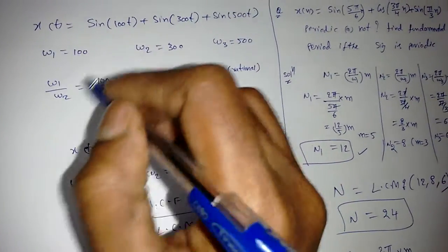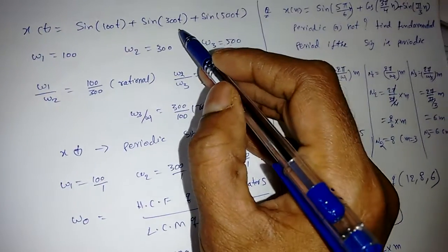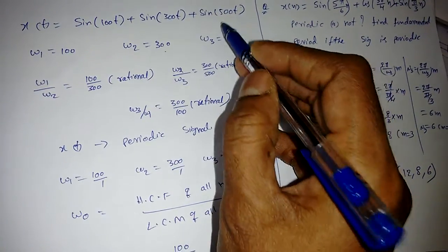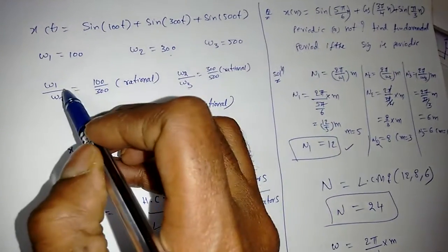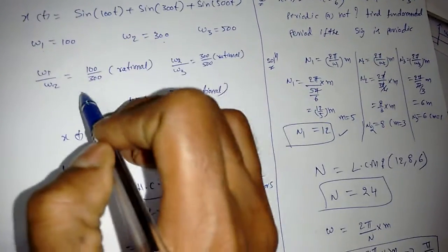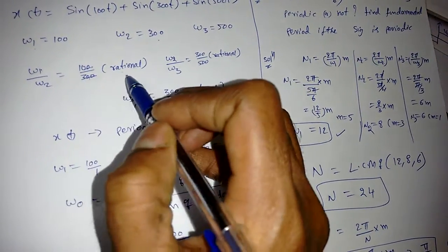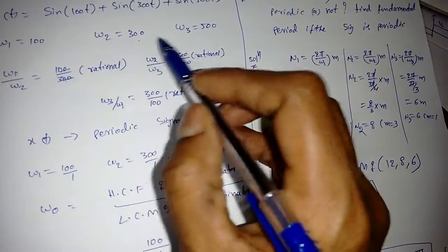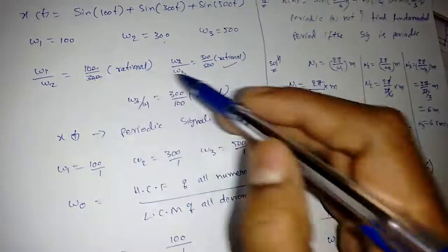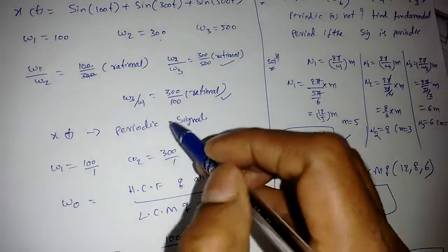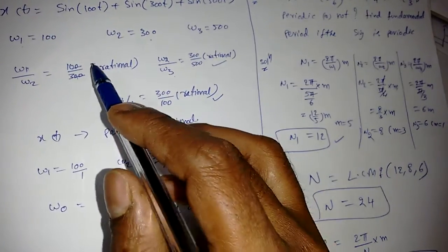For a given signal, we first find omega values: ω1 = 100, ω2 = 300, ω3 = 500. To check if the signal is periodic, we find ω1/ω2 — that is 1/3, which is rational. Similarly, ω2/ω3 is rational, and ω3/ω1 is also rational. That means X(t) is a periodic signal.